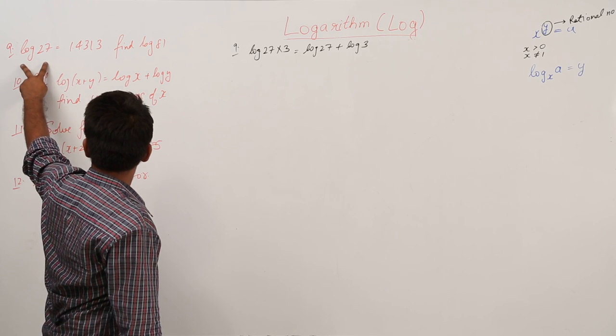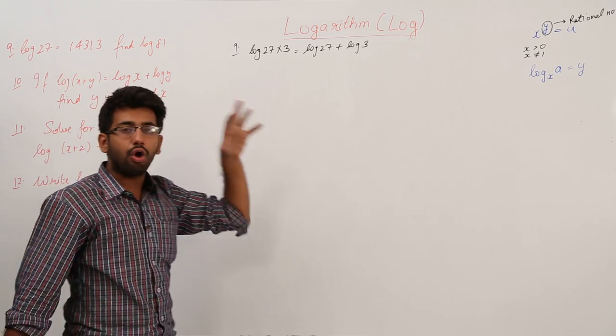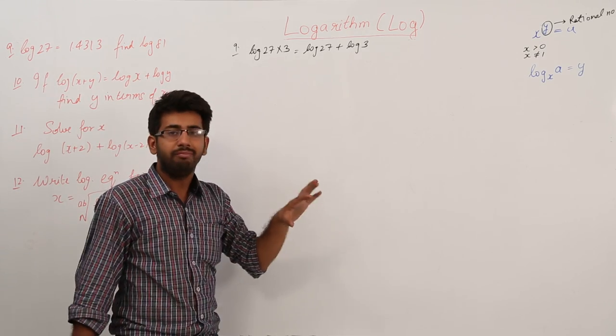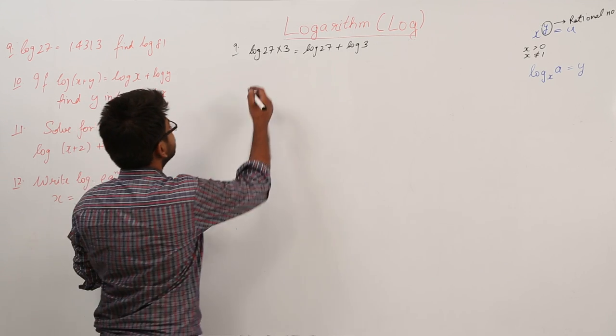So this also means that using this information which is given to us, which is log 27 equals 1.4313, we have to find out the value of log 3. So let us first do that.